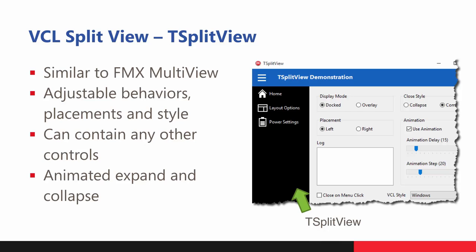The new split view is awesome. It's similar to the FireMonkey multi-view, which I'm a big fan of, but the split view in some ways extends what was available in the multi-view. It gives you the ability to have adjustable behaviors and placements where things open and close automatically — a menu down the side that animates to expand or collapse. It's the new paradigm: instead of a main menu across the top, or the ribbon control, you have this split view. It's kind of what you see in modern Windows 10 apps.